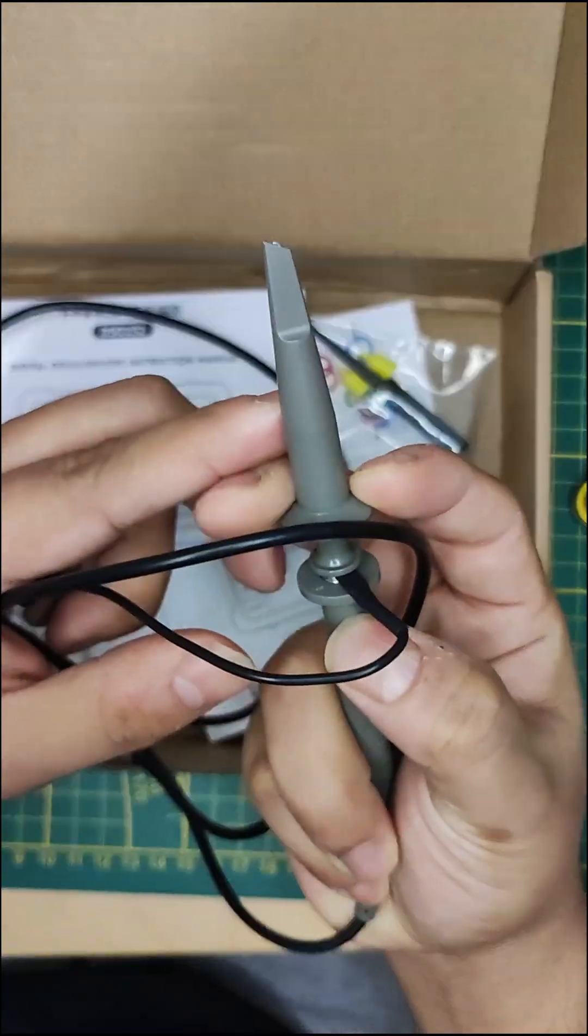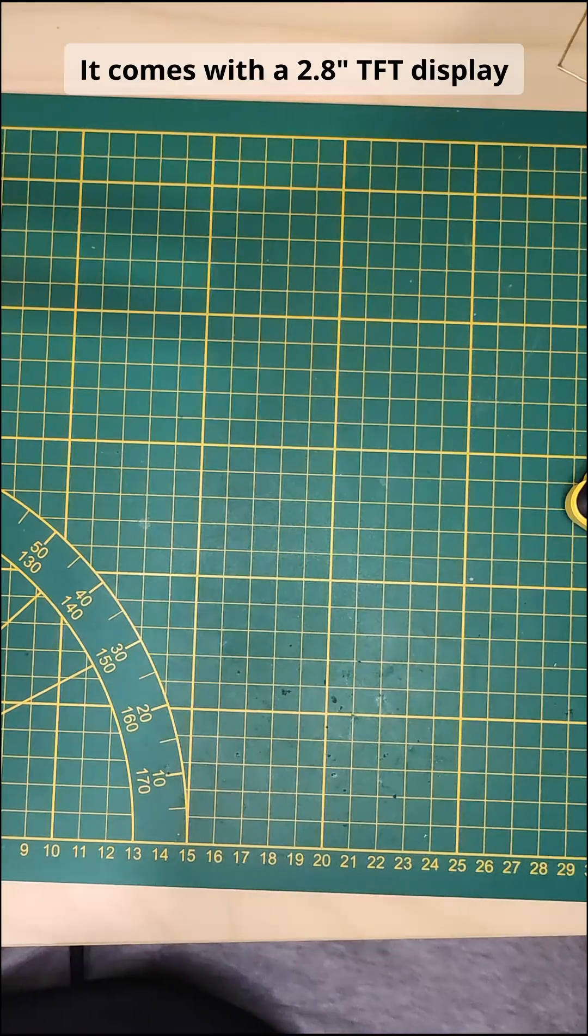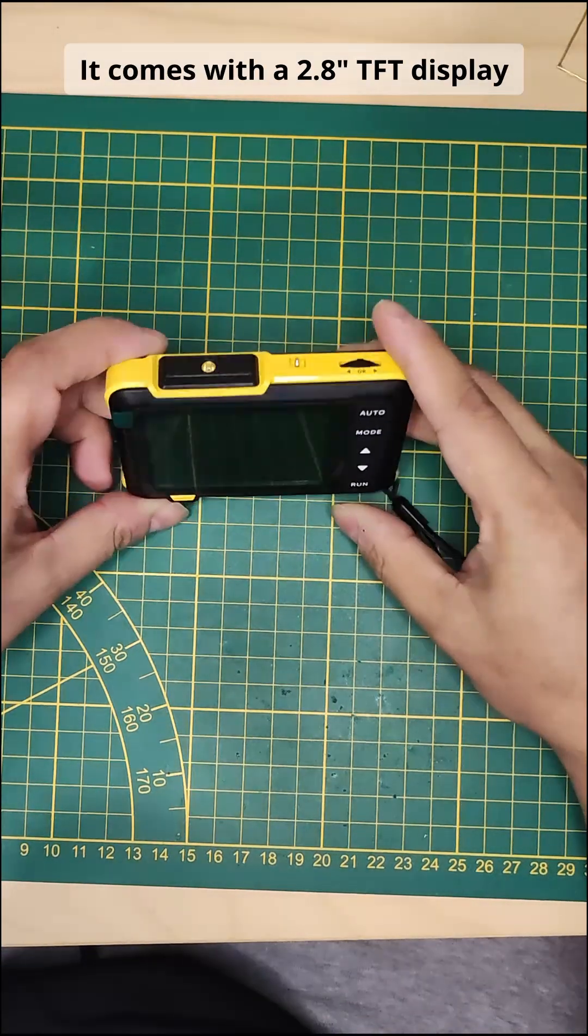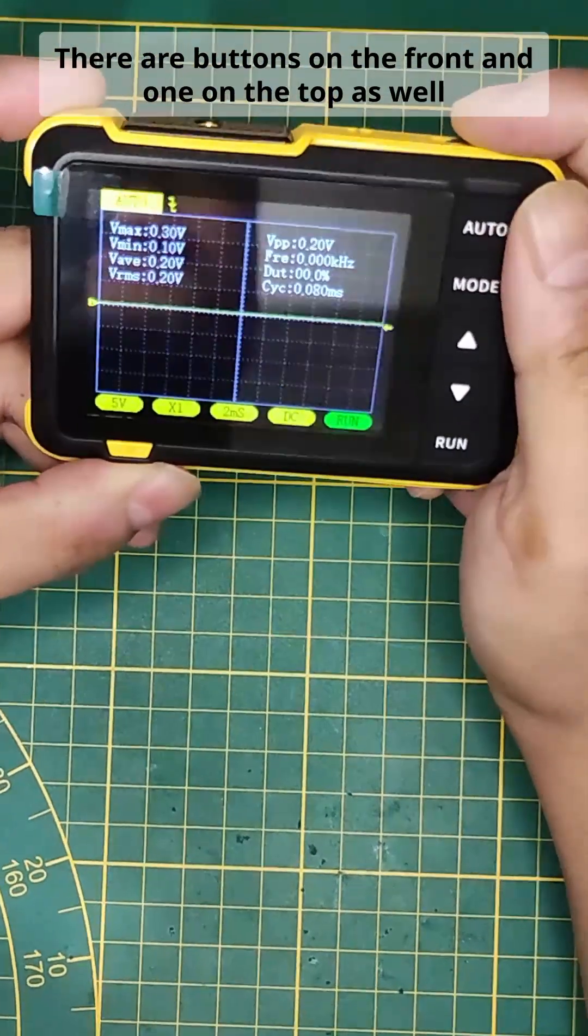It comes with a 2.8 inch TFT display and you can charge it with USB-C. There are buttons on the front and one on the top as well.